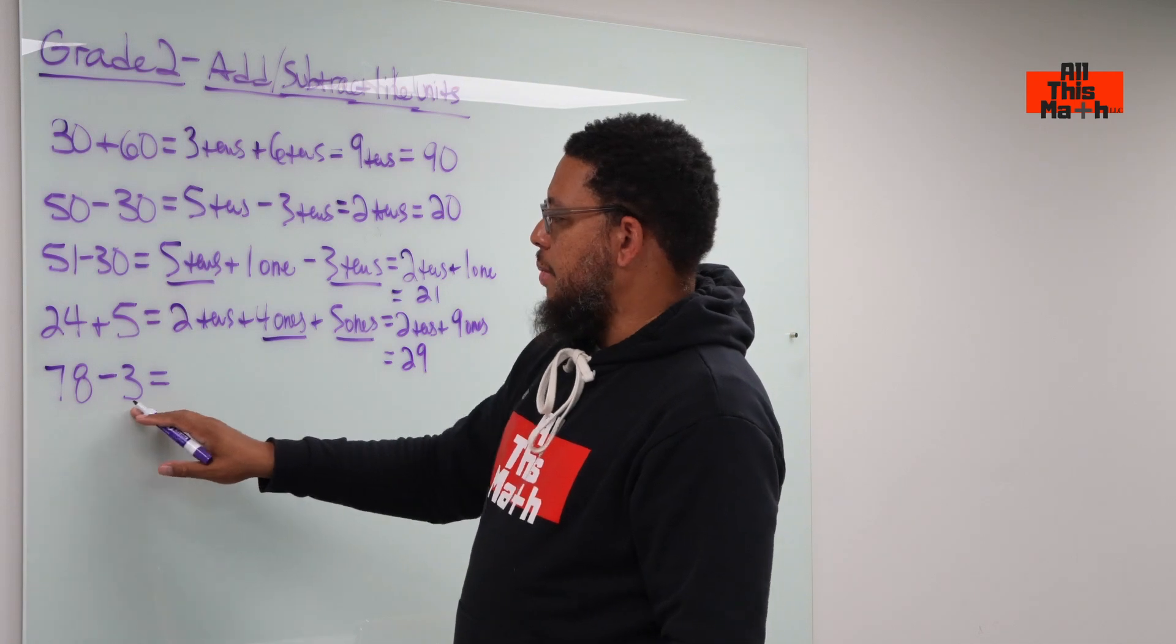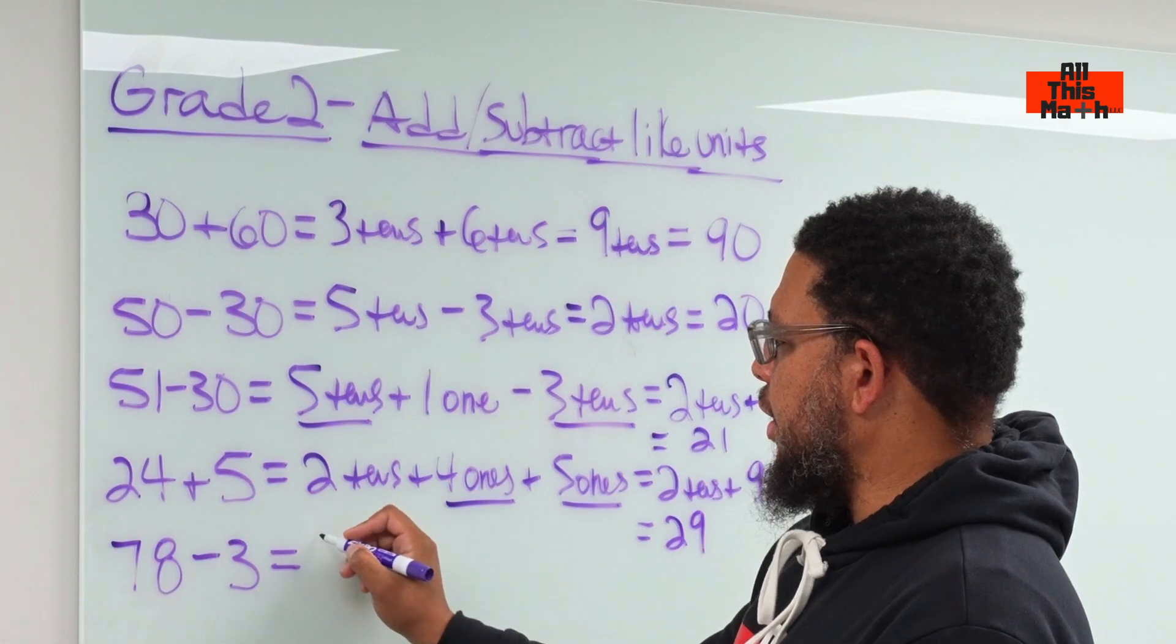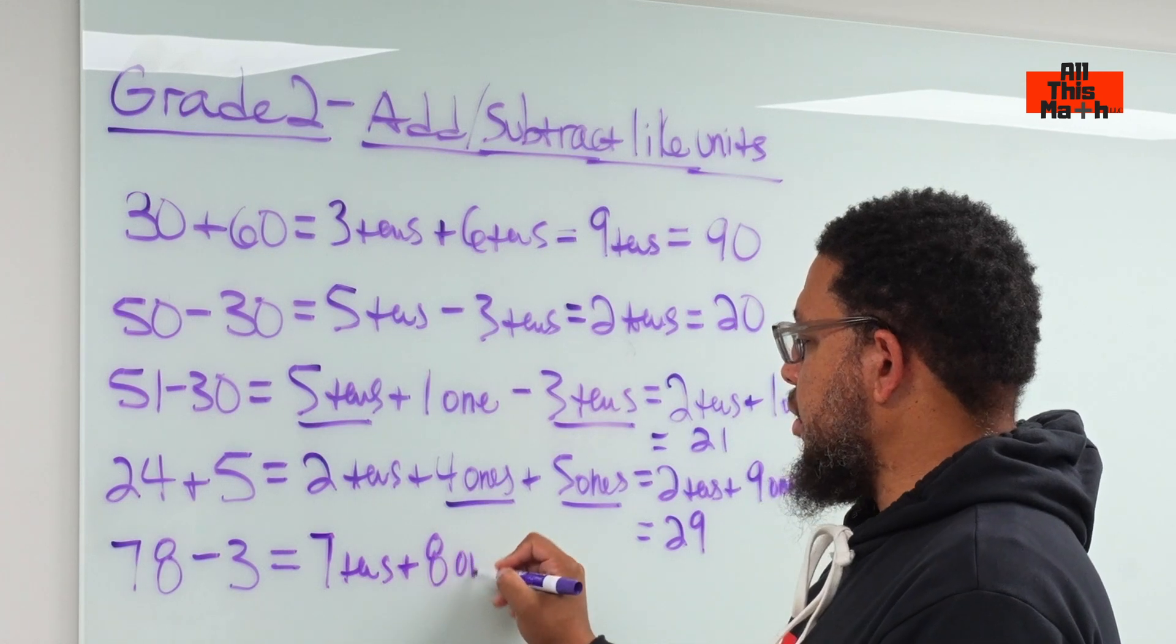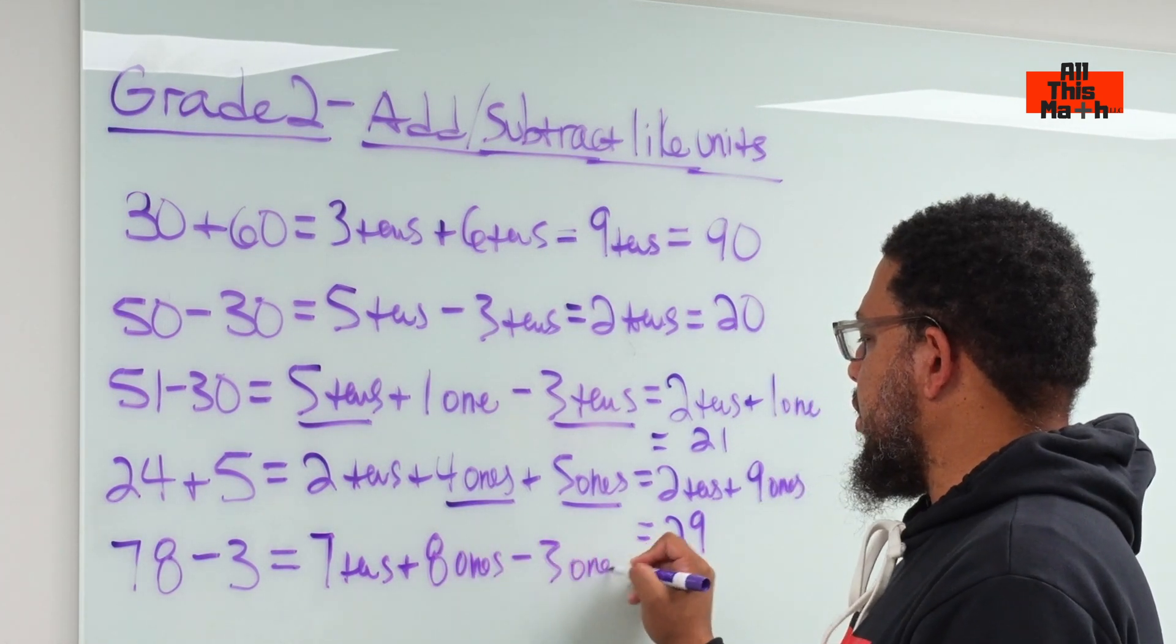Now, last but not least, 78 minus 3. So 78 is seven tens plus eight ones minus three ones.